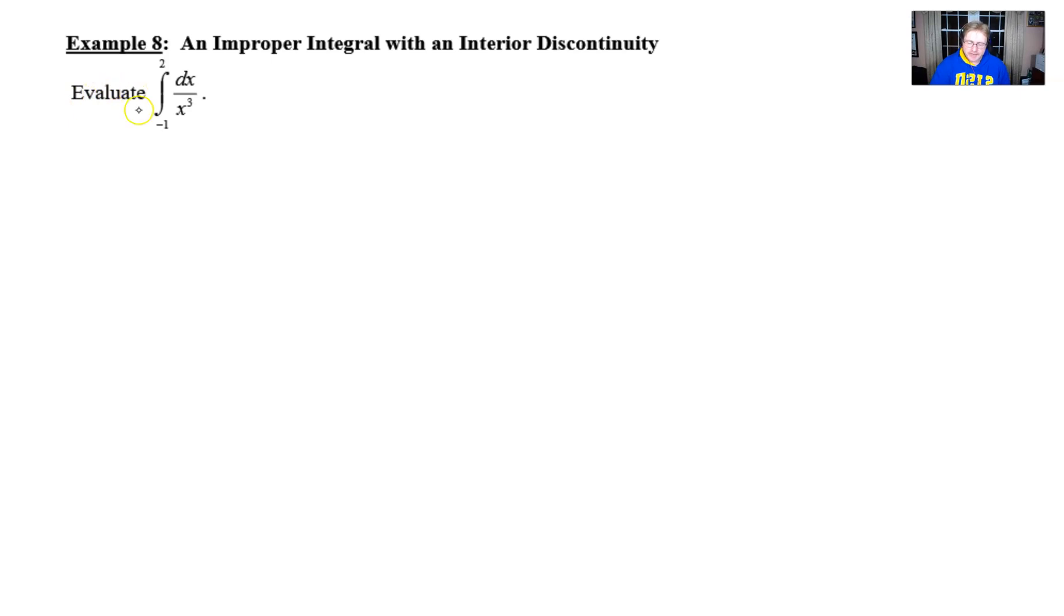We want to evaluate the definite integral from negative 1 to 2 of 1 over x cubed with respect to x. Now what I hope that you see is that this denominator has an issue. x cubed cannot equal 0 because that's going to pose some problems. x cubed does not equal 0 occurs whenever x equals 0. So if x is equal to 0, we have problems. And it turns out that 0 is between our negative 1 and our positive 2. So we have to reconcile this discontinuity.